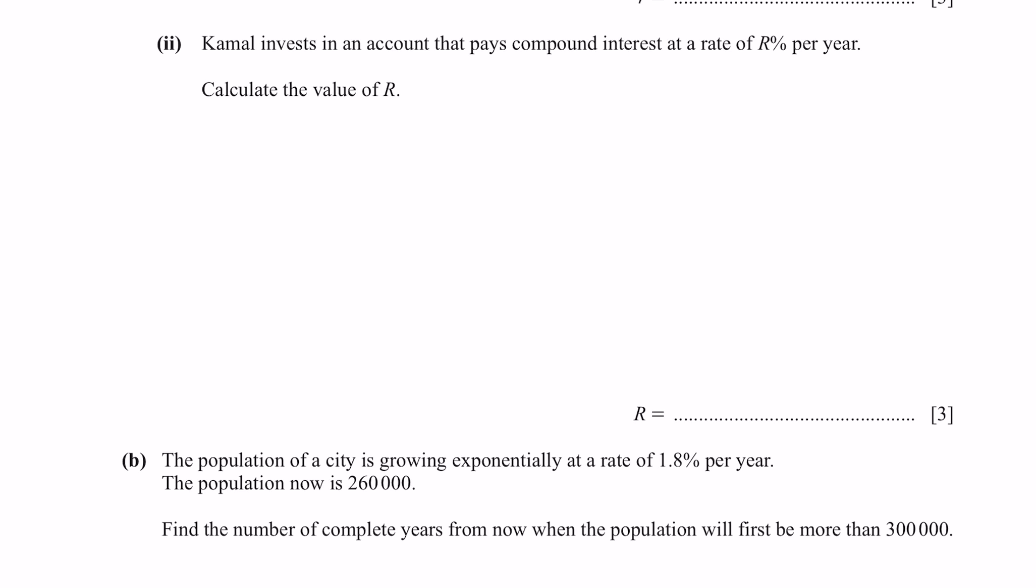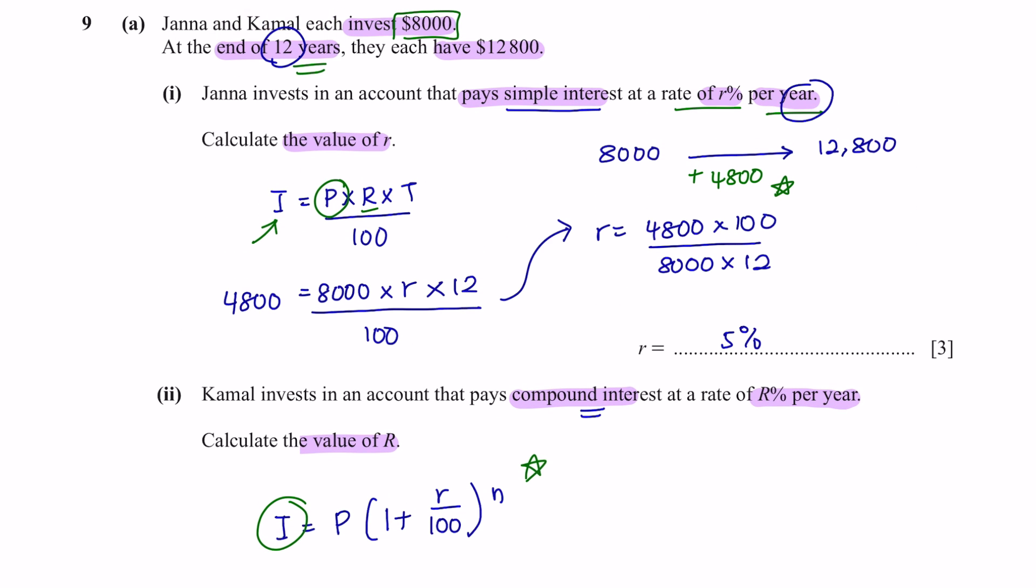Next, question part 2. Kamal invests in an account that pays compound interest at the rate of R% per year. Calculate the value of R. The formula for compound interest is this one. But this time, the I here doesn't just stand for the amount that is gained but instead is the amount that has been invested plus the interest.